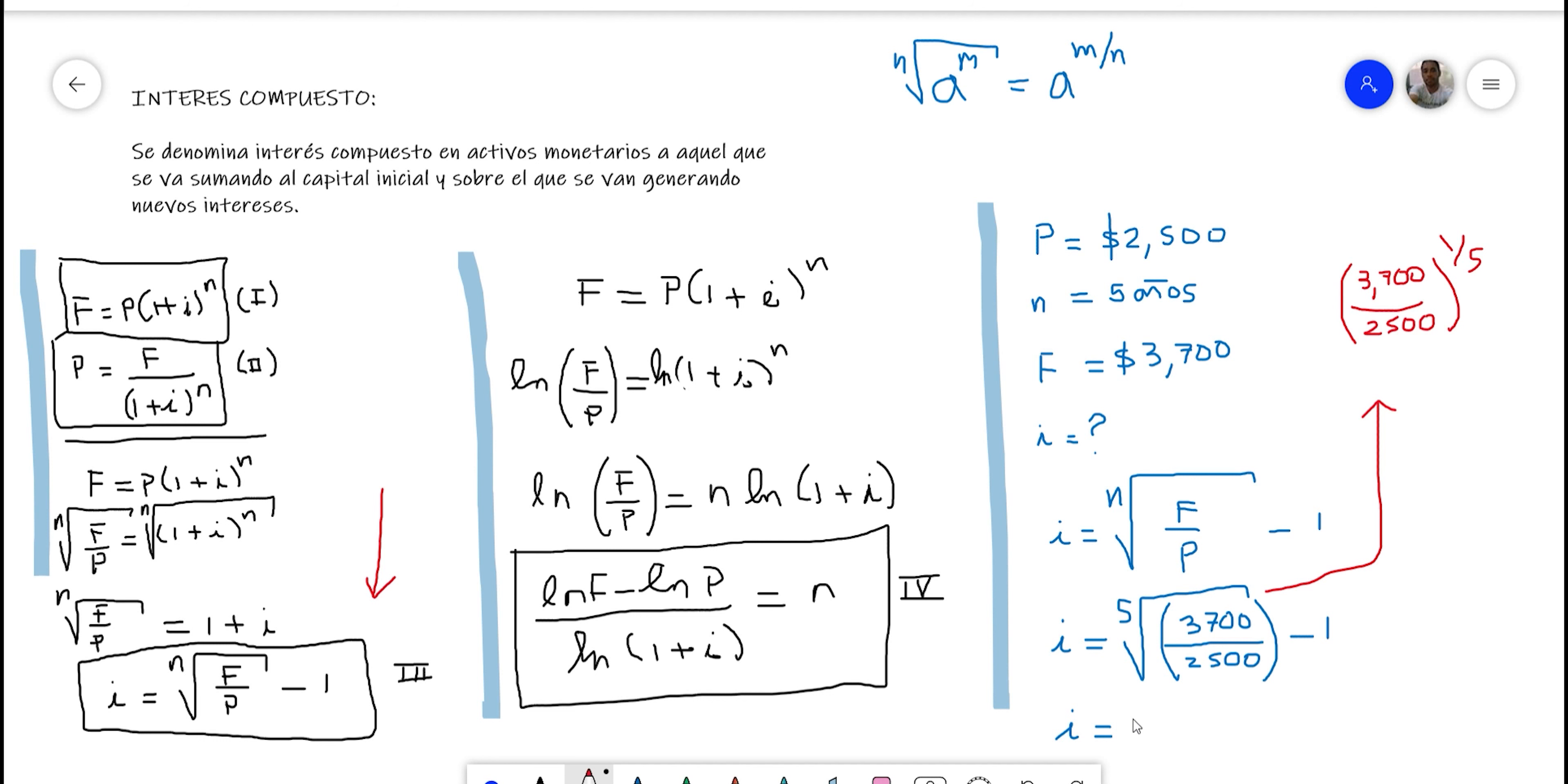Then that gives me a value. When doing the calculation here, for those who already did it, the fifth root of this will give 1.081 minus 1. Therefore, look, the interest rate, we are going to subtract that value from 1, and you tell me how much that result is.